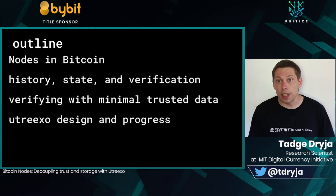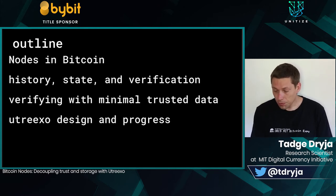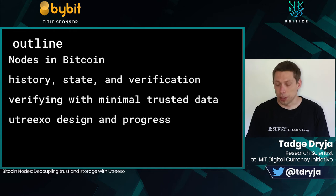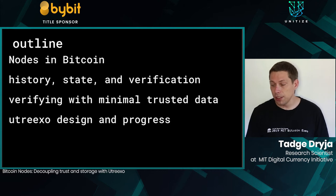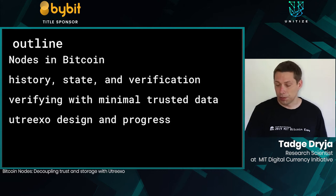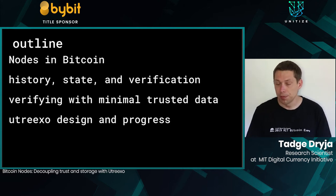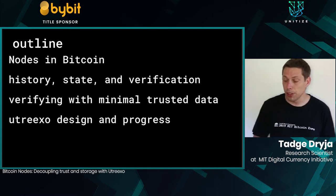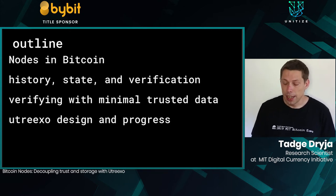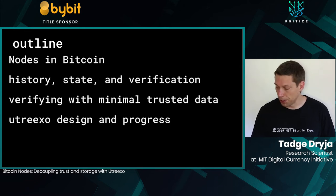Here's a quick outline of what I'm going to talk about. I'll cover what a node is — what these things called nodes in Bitcoin are and how they work — Bitcoin history, state and verification, how those fit together, verifying the state of Bitcoin with minimal trusted data, and then UTXO and its design and properties.